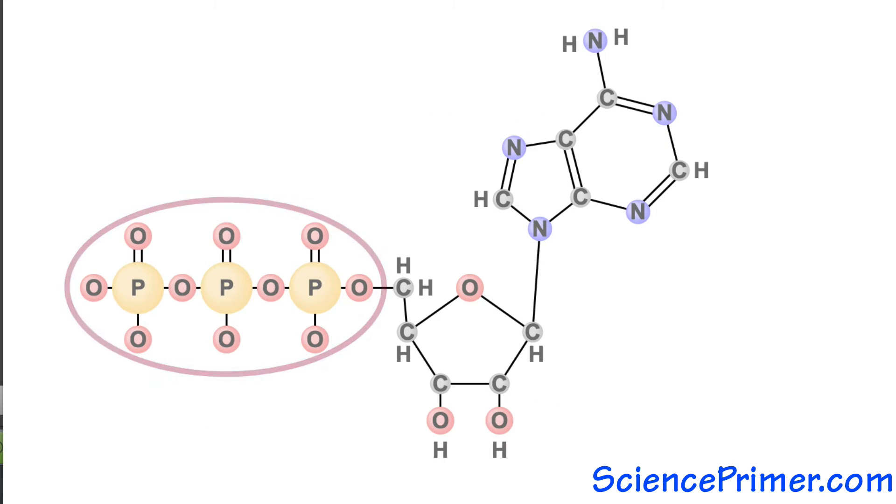In the conditions found in living cells, some of the oxygen atoms on the phosphate molecules are negatively charged. These negatively charged atoms repel each other, and this repulsive force creates potential energy.